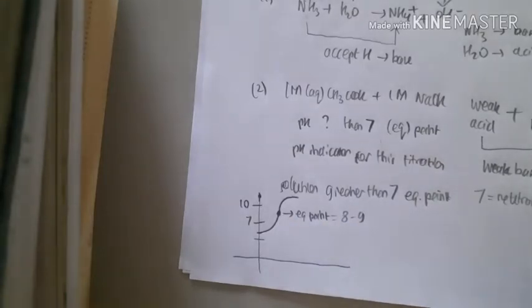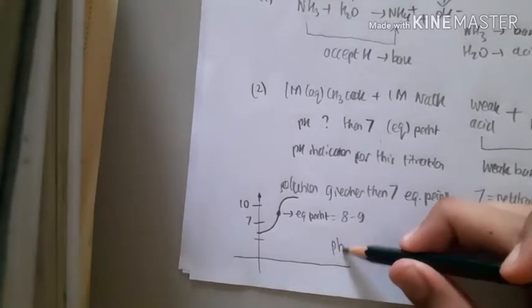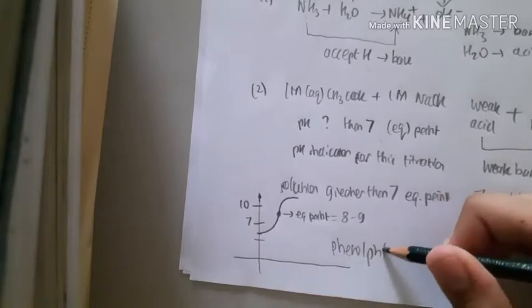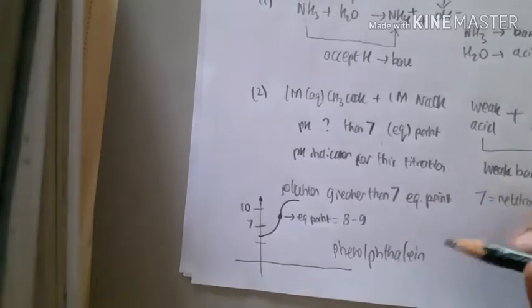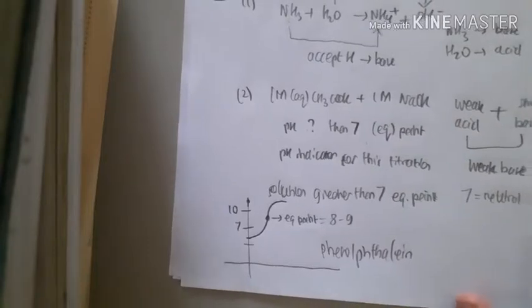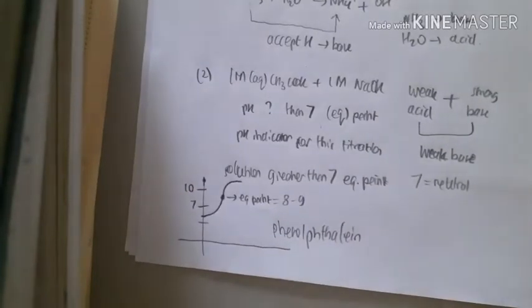Now, if you have weak acid and strong base, the appropriate pH indicator for this titration is phenolphthalein. So literally, you write phenolphthalein in the answer. And if you wonder, what if other cases?